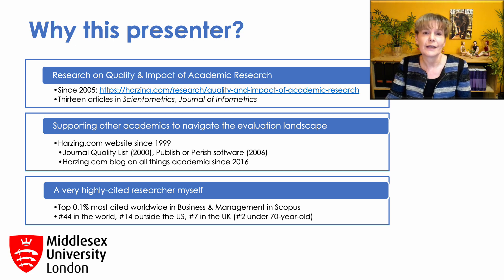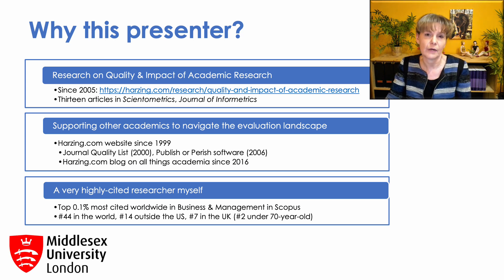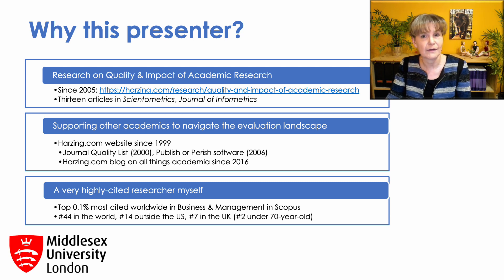Second, I have been supporting academics in this field since the last century with my website, which includes the Journal Quality List, the Publish or Perish software that you'll hear much more about later, as well as a blog on all things academia. I started this blog in 2016 and it has well over 300 postings now. Finally, I'm a very highly cited researcher myself. In a recently published ranking based on Scopus data, I am number 44 in the world in my field of business and management, number 14 outside the US and number 7 in the UK.